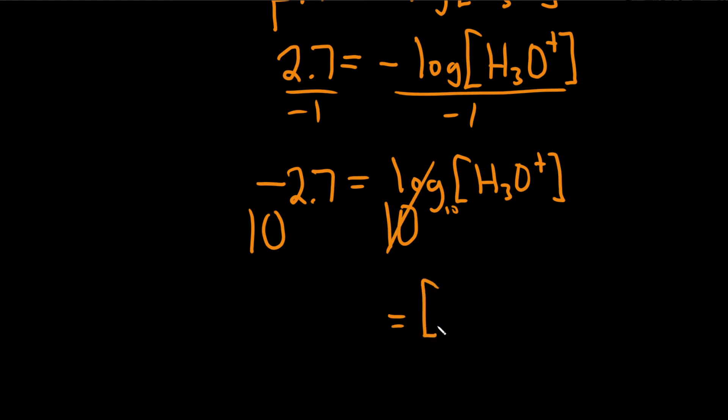So you just get H3O+ equals 10 to the negative 2.7. That's your hydronium ion concentration. Now, a lot of times, people want the answer in scientific notation. So I'm going to plug it into my calculator and see what I get.